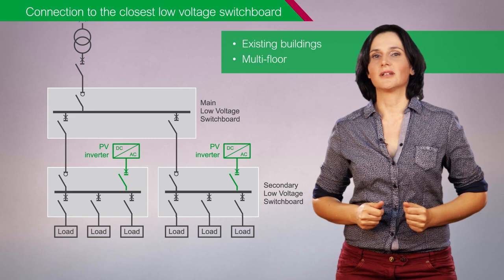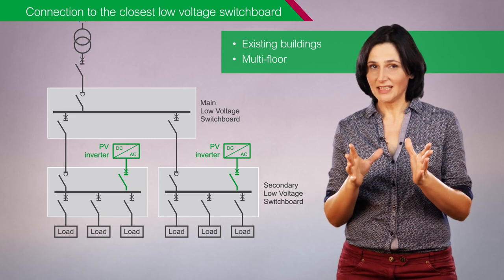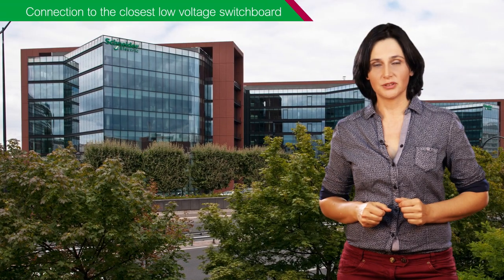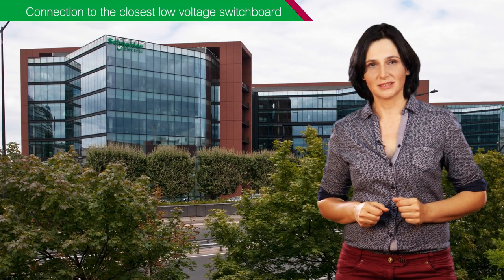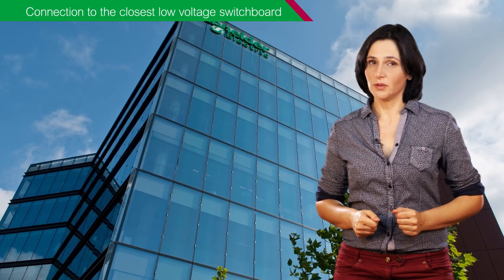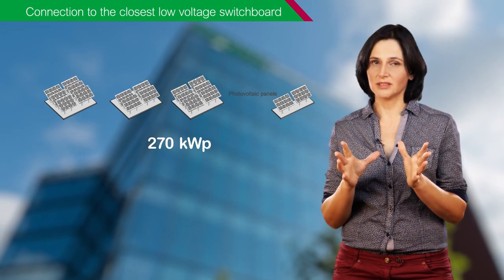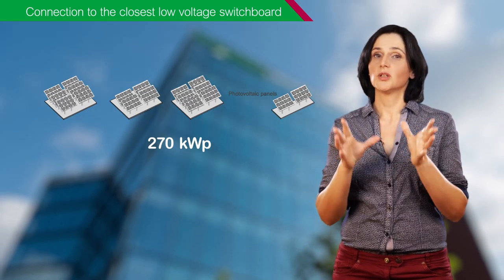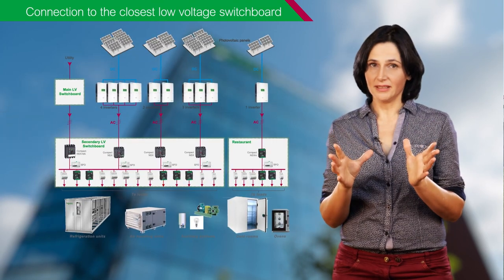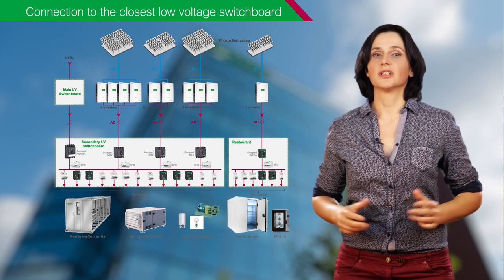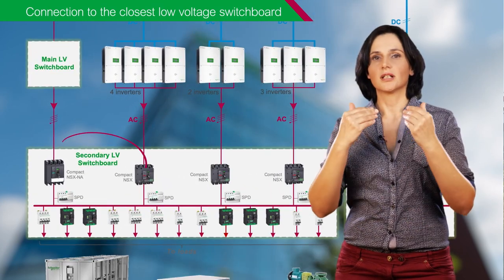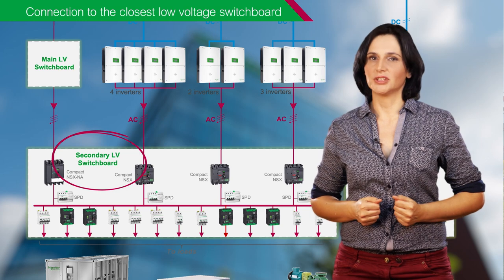The main low voltage switchboard is usually at ground level. This type of installation is used at the Schneider Electric headquarters in Paris. In these existing buildings, photovoltaic production of 270 kW peak was added on the roof. In each building, the photovoltaic production was brought together and connected to the closest secondary low voltage switchboard.